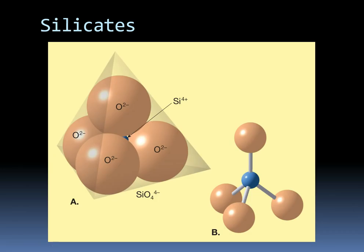We'll start with the silicate minerals. The silicates are the most common type of mineral on Earth — they account for over 95% of the continental crust and almost 100% of the oceanic crust, and actually a whole lot of the mantle too. They're going to be built primarily out of a silicon-oxygen tetrahedron. A tetrahedron is a four-sided shape, so this is a silicon atom surrounded by four oxygen atoms.